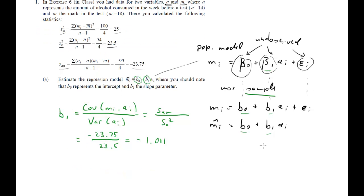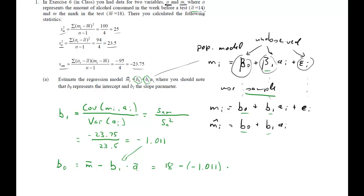We're also asked to calculate b0, and we always calculate the slope coefficient first. b0 is the average value of the dependent variable minus b1 times the average value of the explanatory variable. The average value of m is 18, minus negative 1.011 times the average value of a, which was given to be 14. If you plug everything in and calculate it, the value is 32.154. This is the result for part a.